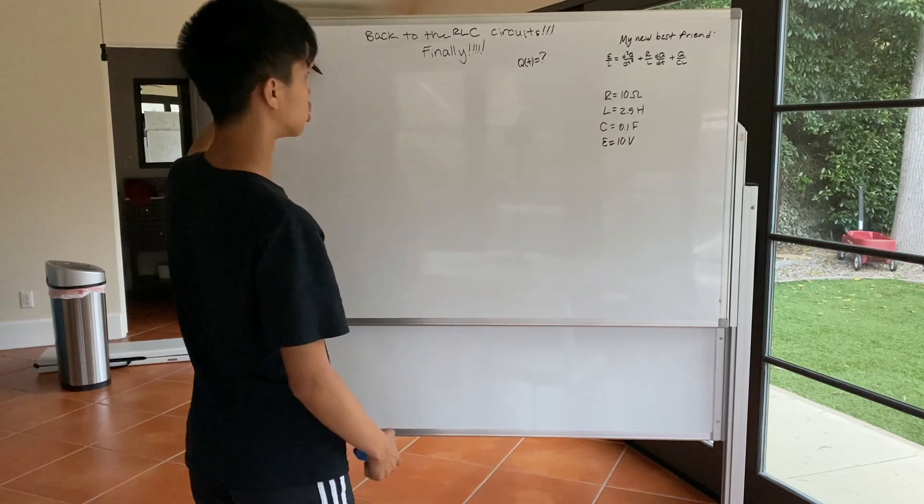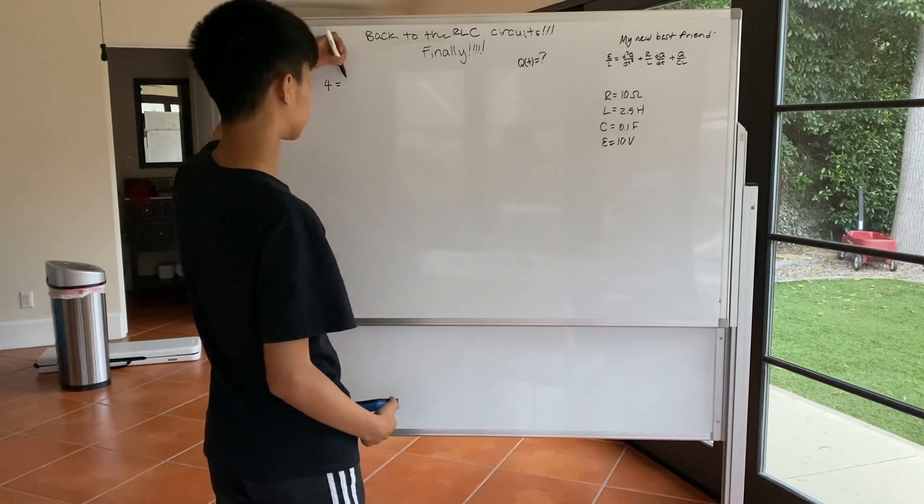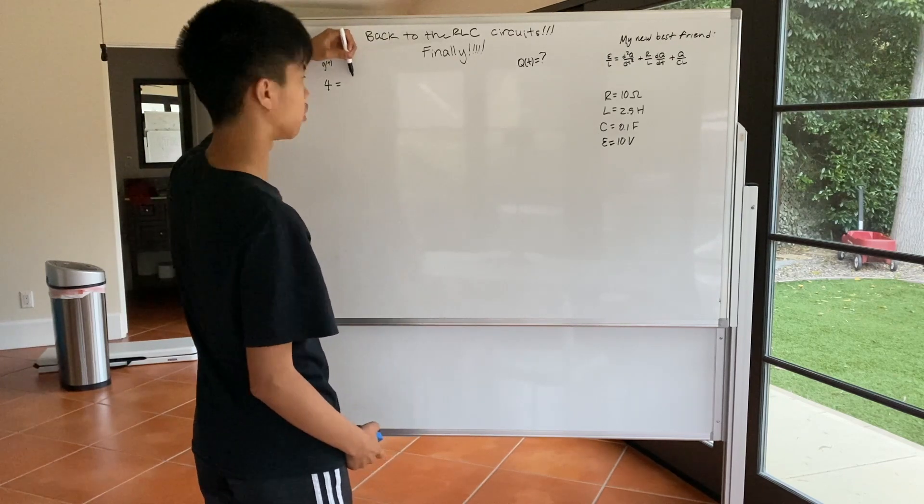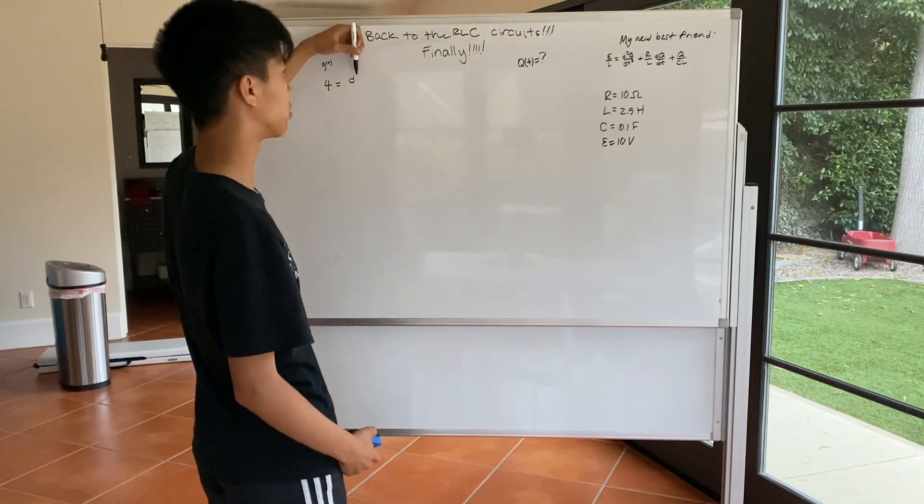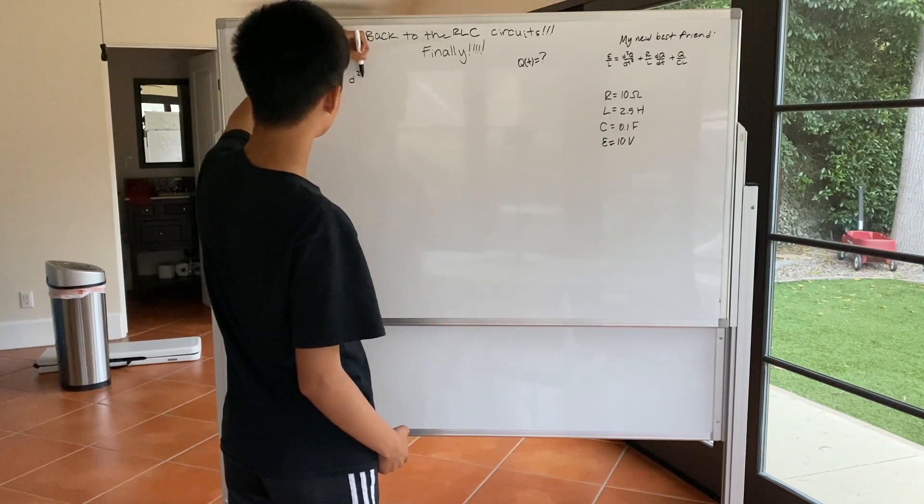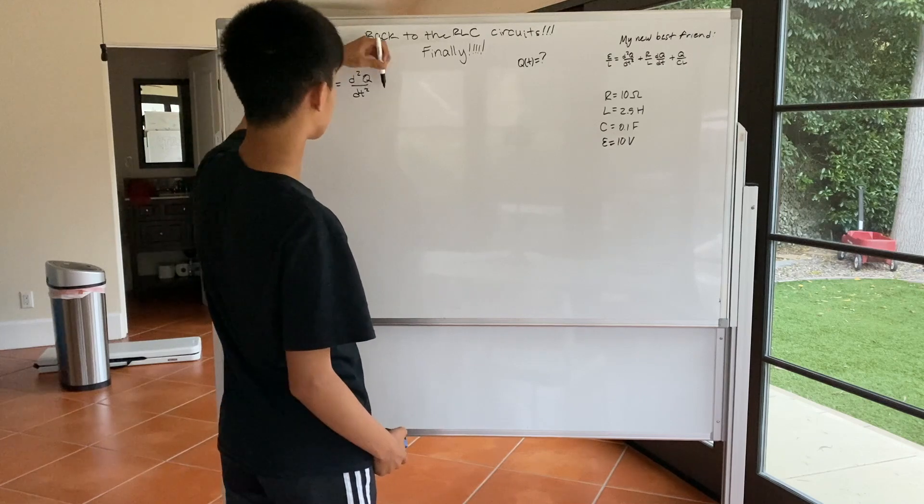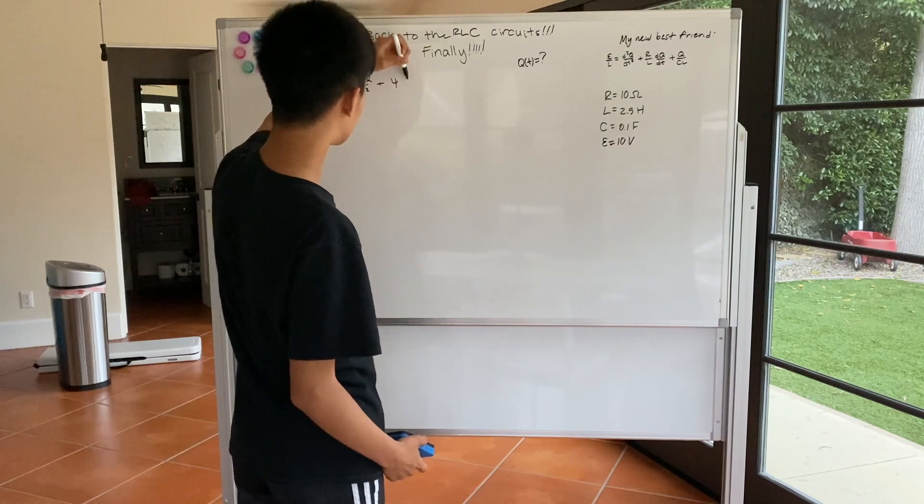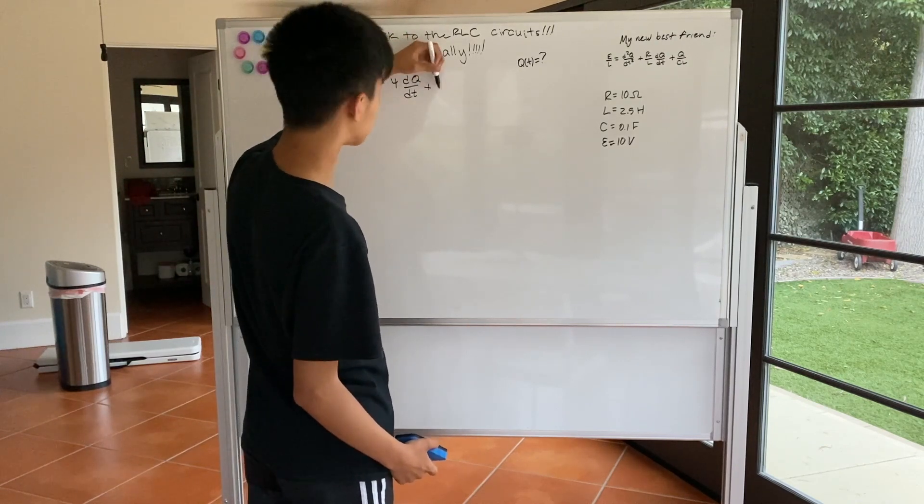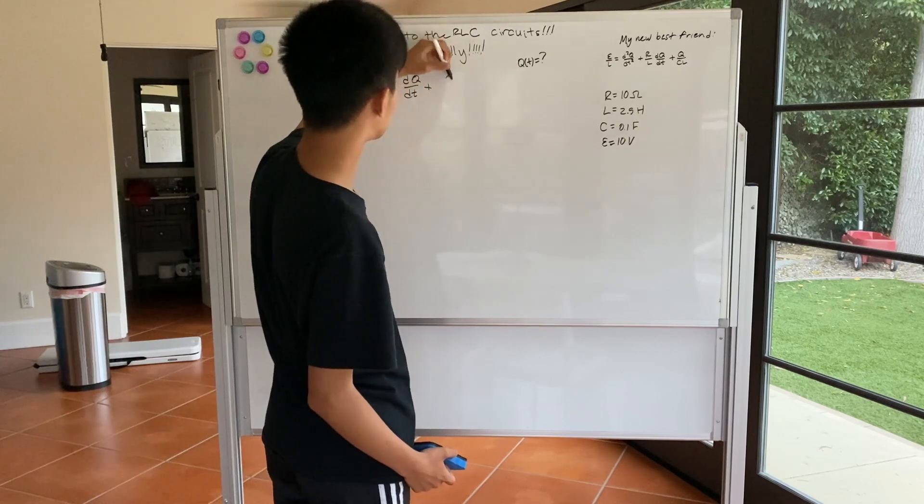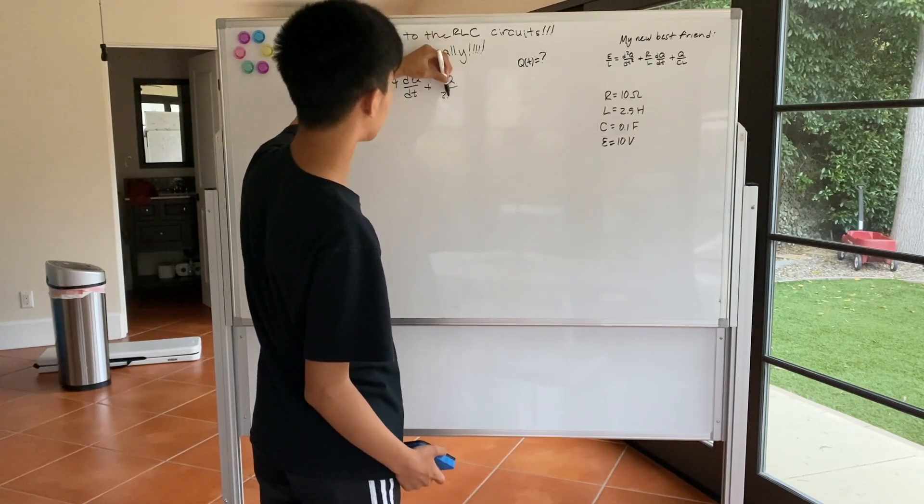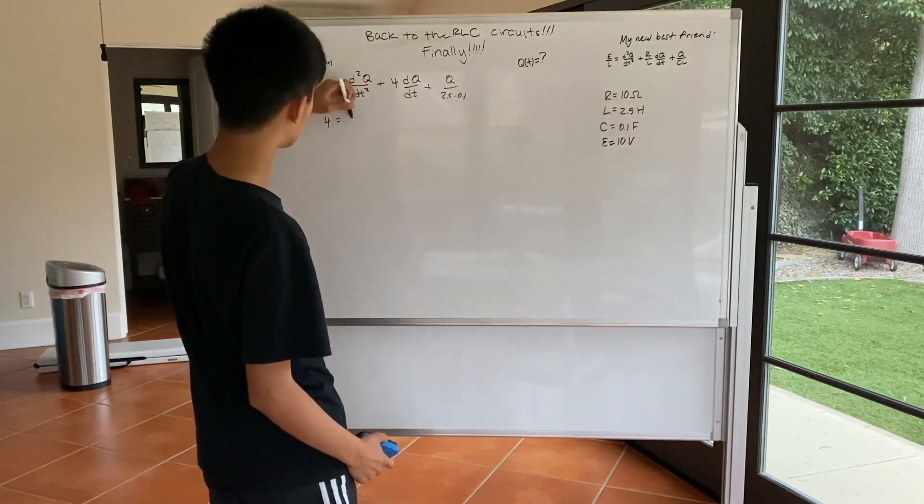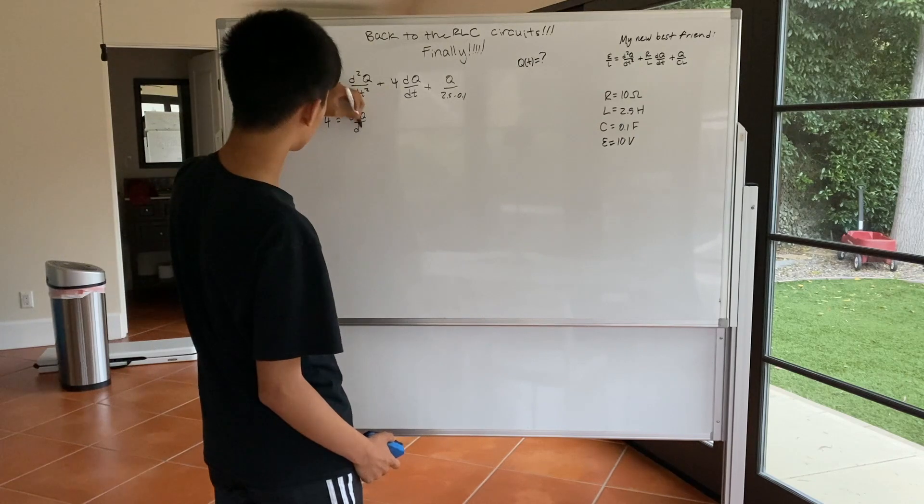So let's start by plugging everything in. So 10 over 2.5 is 4 for the left-hand side, or G of T, we'll call it, because that's what you call it in this differential equation solving method called variation of parameters. We have second derivative of Q with respect to T, plus R over L, that's also 4, then dQ dt, plus Q over 2.5 times 0.1, that is also 4. So 4 equals whatever I'm about to write.